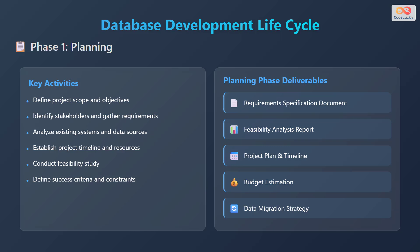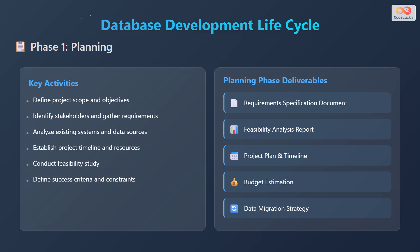Key deliverables in the planning phase are a requirement specification document, a feasibility analysis report, a project plan and timeline, a budget estimation, and a data migration strategy.